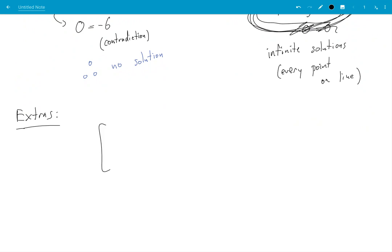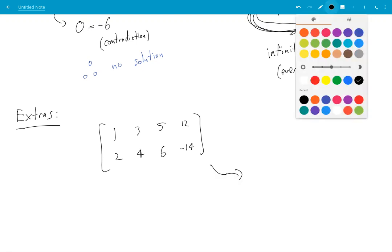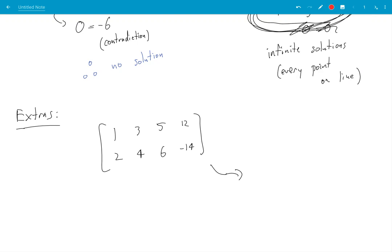So if I have a matrix, 1, 2, 3, 4, 5, 6, 12, minus 14, of course. Now we give this a name, we call this a 2 by 4 matrix.